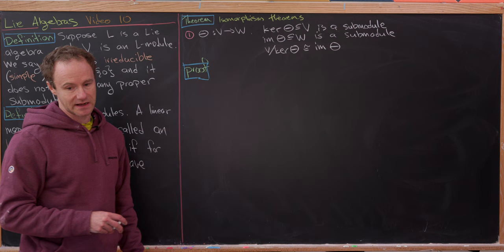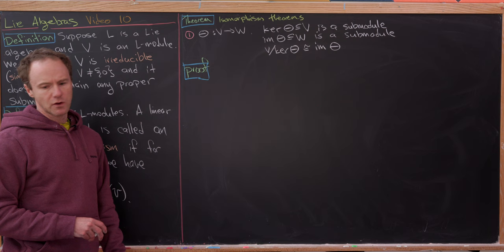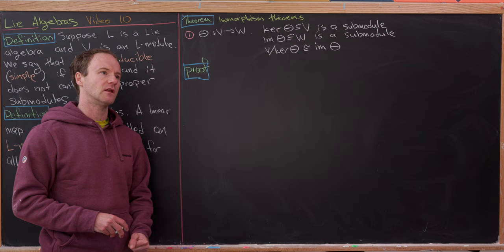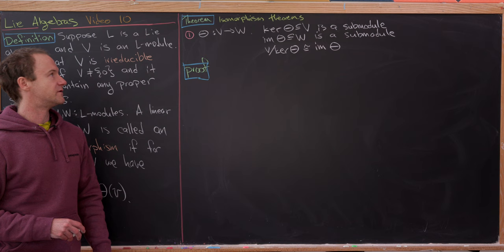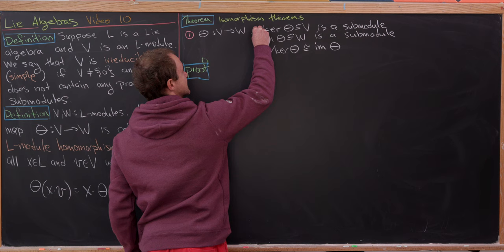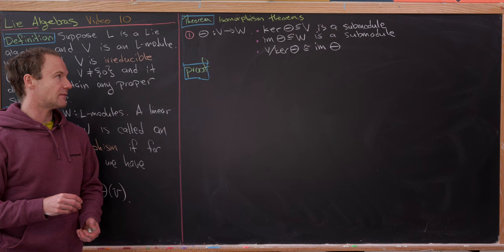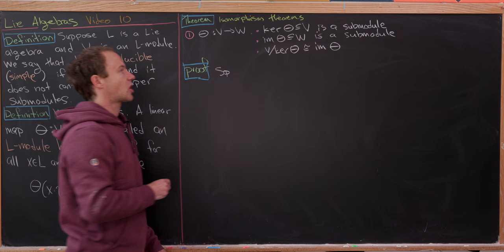Now let's look at the isomorphism theorems for L-modules. Suppose θ is an L-module homomorphism from V to W. Then: the kernel of θ is a submodule of V; the image of θ is a submodule of W; and the quotient module V mod ker(θ) is isomorphic to the image of θ. Let's prove the first part — that the kernel of θ is a submodule.